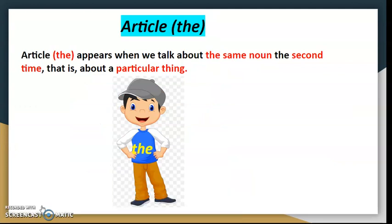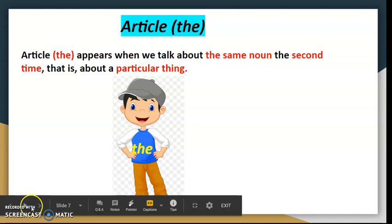Article The appears when we talk about the same noun the second time — that is, about a particular thing.